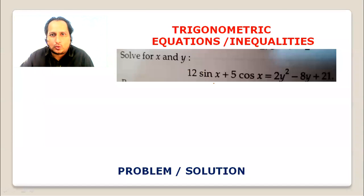Solve for x and y: 12 sin x plus 5 cos x equals 2y square minus 8y plus 4.